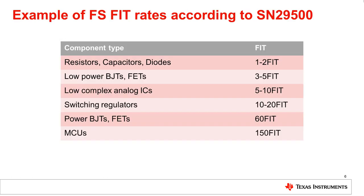The table below is an example of functional safety fit rates according to SN29500. For simple devices like resistors, capacitors, and diodes, the fit rate is very low, with a fit rate of 1 to 2. More complicated devices, like switching regulators, can have a fit rate in the range of 10 to 20. And some MCUs that are more complex could have a fit rate in the range of 150.